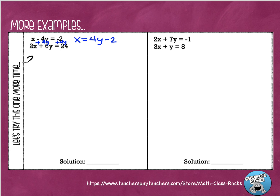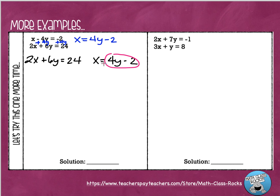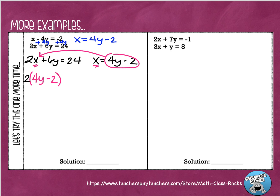Let's write these side by side: 2x plus 6y equals 24, and the new equation I already solved for a variable. I'm going to circle the expression — take the equation that's already solved for the variable and circle that expression. This expression is the value of x, so this time I'm going to find x in my other equation and substitute that value in place of the x. Here's 2 — instead of that x, I'm going to put this expression: 4y minus 2. Bring down the rest of my equation: plus 6y equals 24.